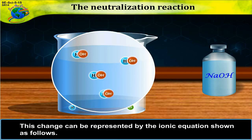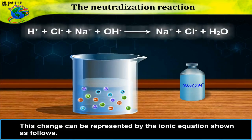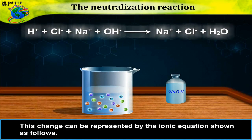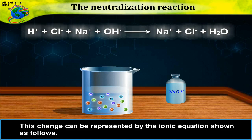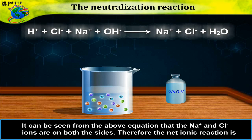This change can be represented by the ionic equation shown as follows. It can be seen from the above equation that the Na⁺ and Cl⁻ ions are on both sides. Therefore, the net ionic reaction is H⁺ + OH⁻ → H₂O.